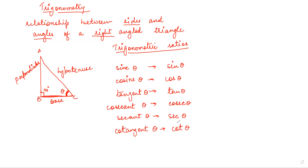So first of all, just be familiar with these names. Now, what are sine, cosine, tangent? You don't have to study all of this in the present class — it will keep evolving in higher classes. But right now, at least remember the ratios: cos, sine, tan, cosec, sec, cot. Now, what is the relationship? This theta is an angle, and we will now relate this angle with the sides of the triangle.